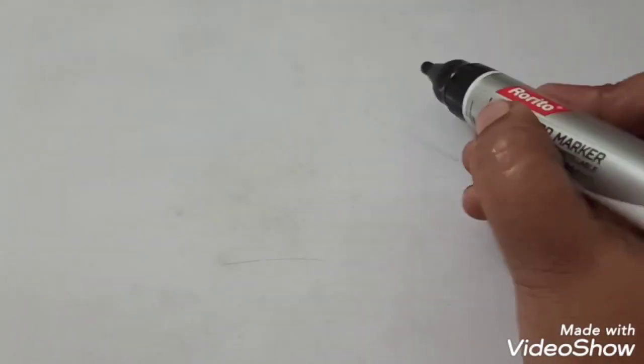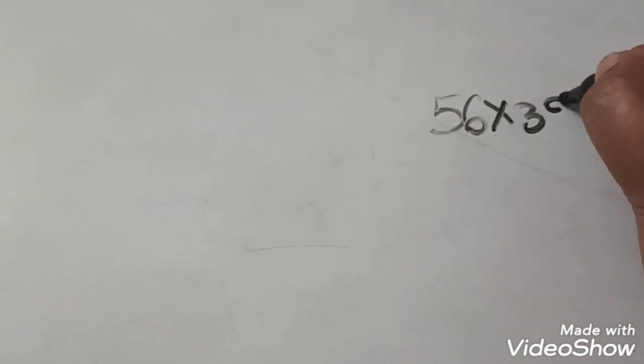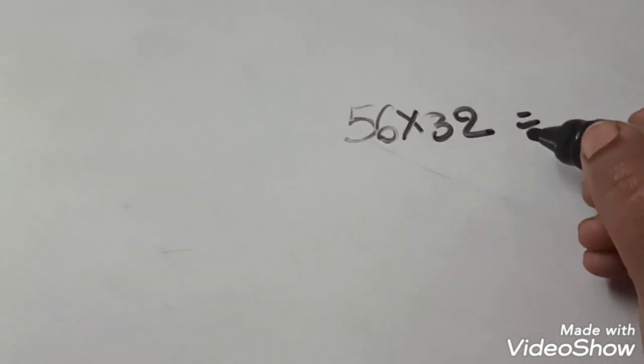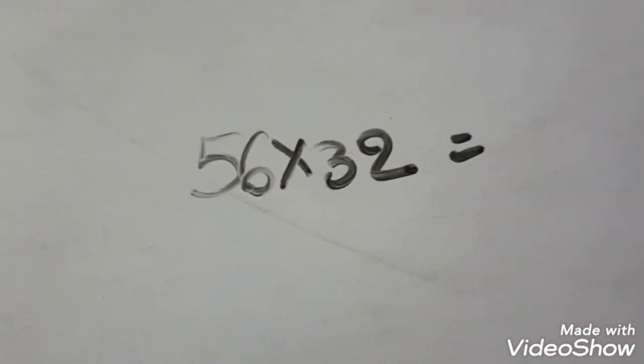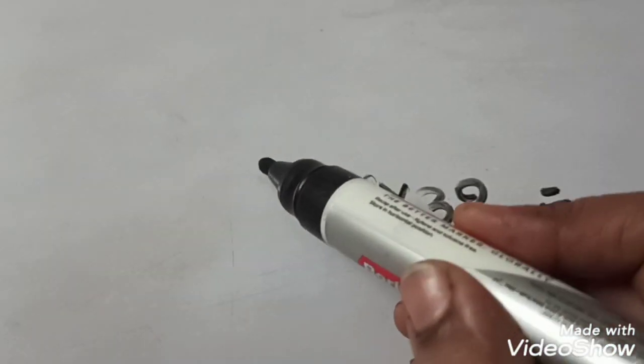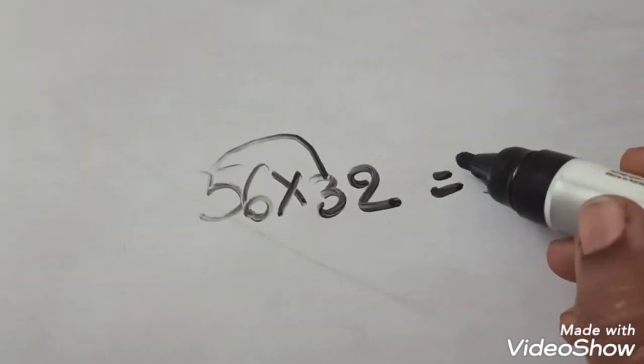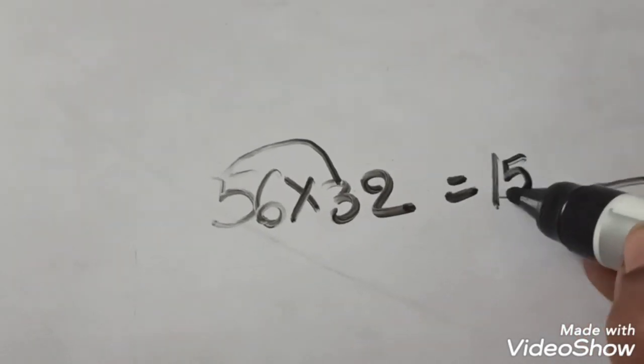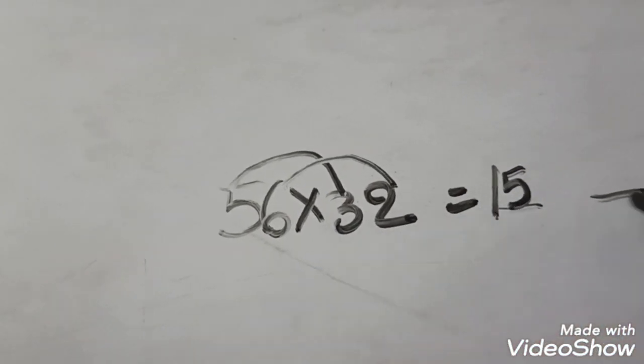If we take another problem, 56 into 32, here also we have to follow the same steps. First step, we should draw three places in the answer. Next, tens place and tens place should multiply. Five threes are 15. In ones place and ones place, we should multiply. Six twos are 12.